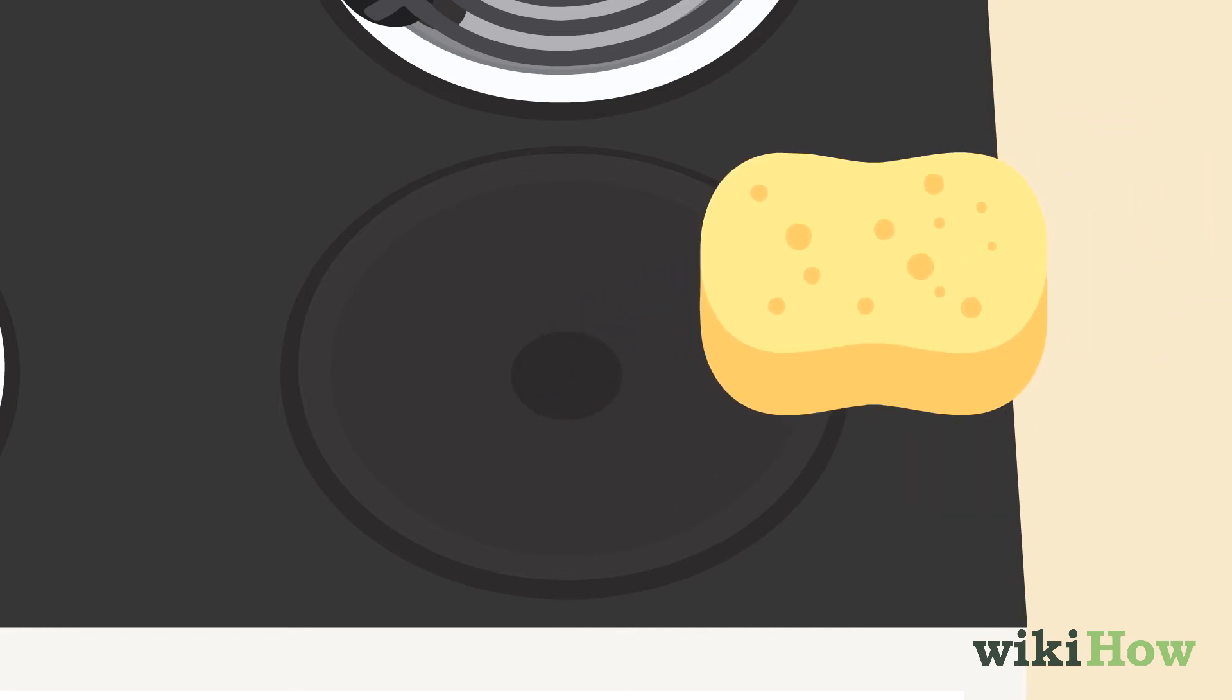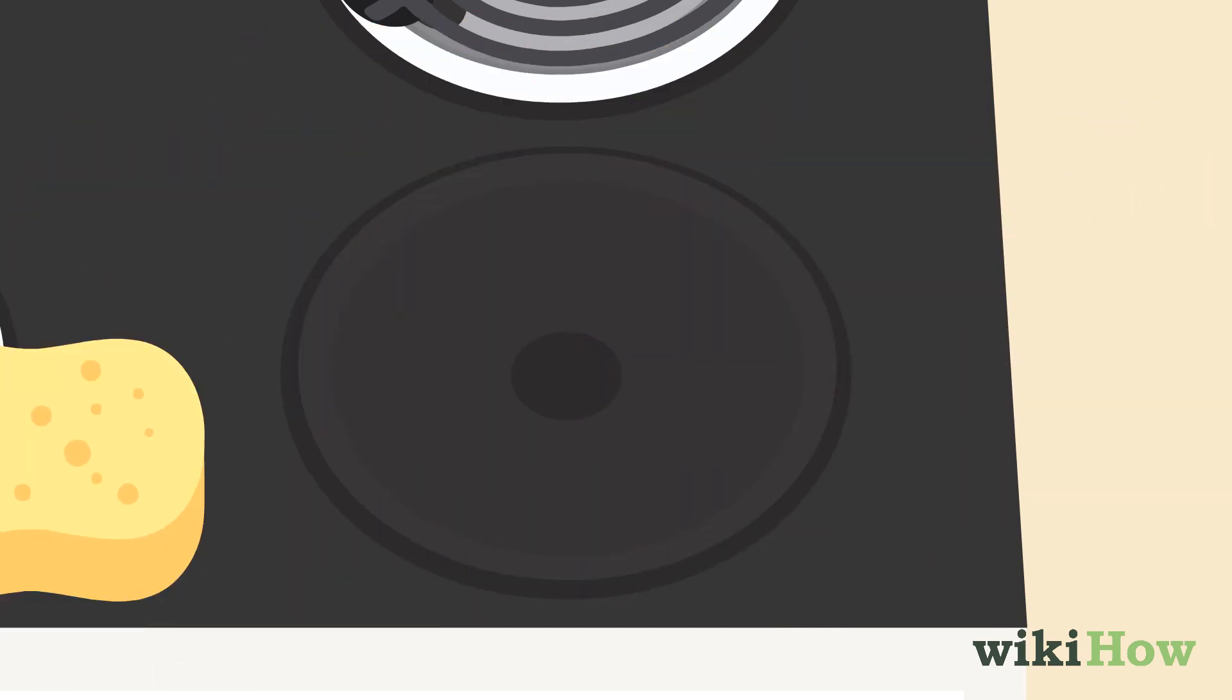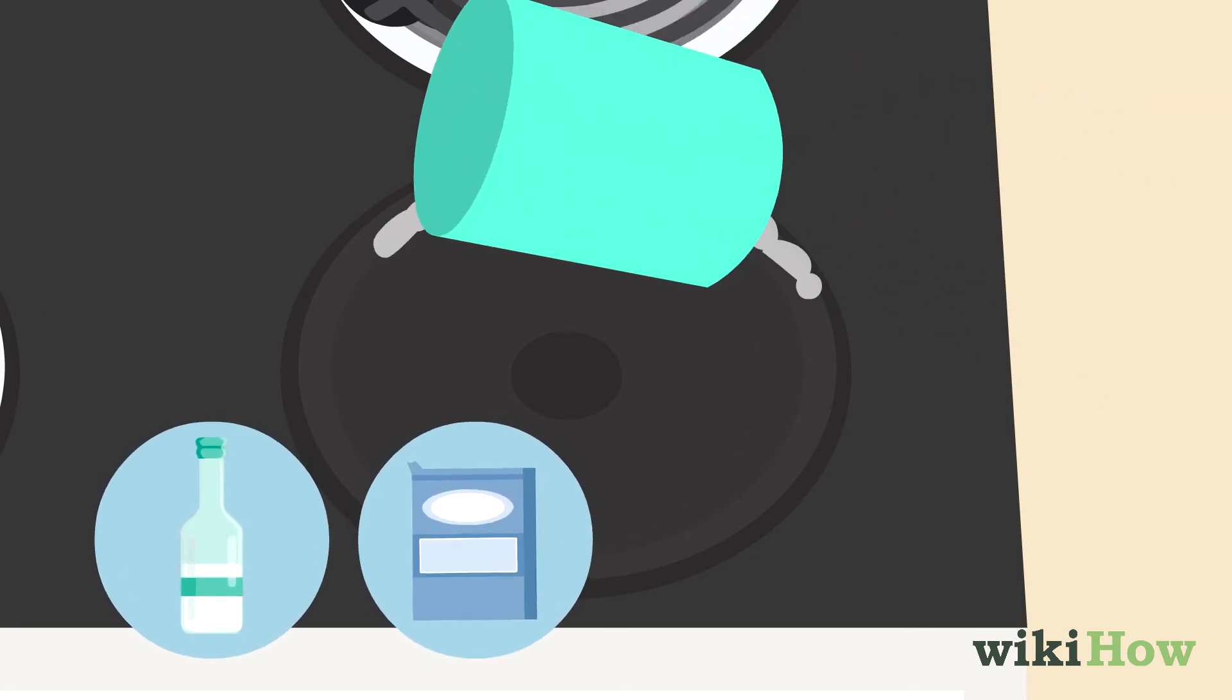Finally, use a soapy sponge to wipe down the stovetop. Use the vinegar and baking soda mixture for stubborn stains.